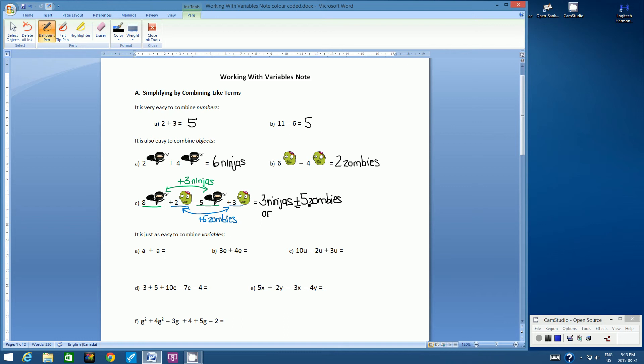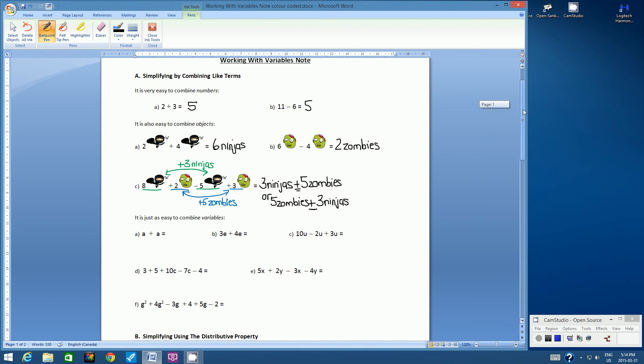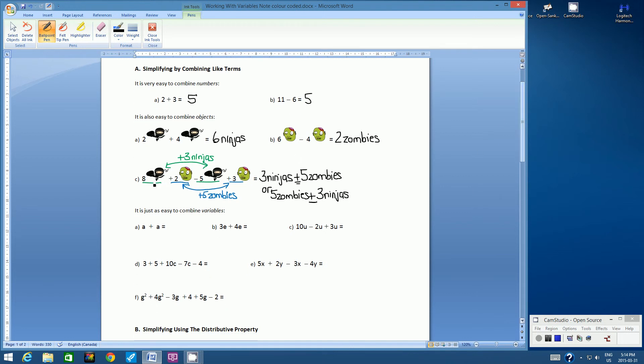Or, if we were to flip this around, we could write it as 5 zombies plus 3 ninjas. This positive is very important, because it's positive 3 ninjas. So I hope that makes sense. So let's go on to the next few examples.